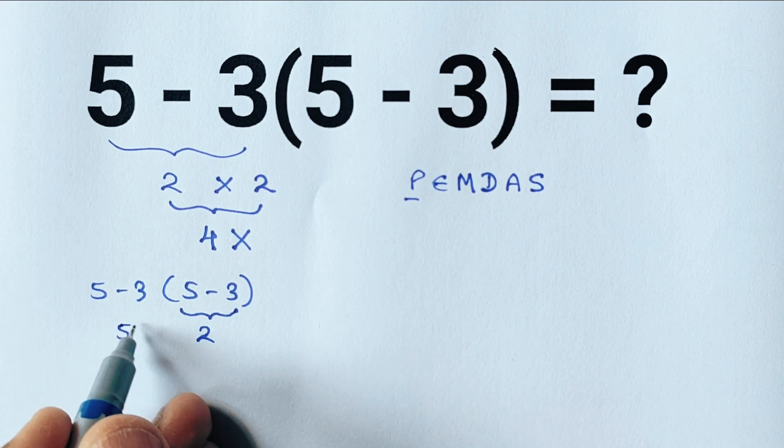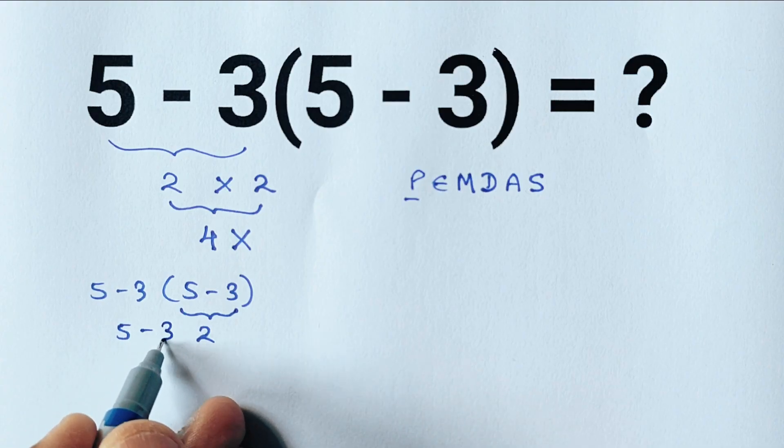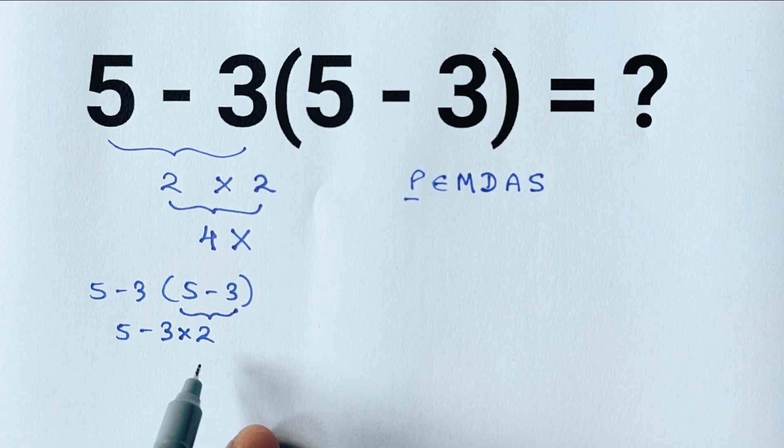Now the expression looks like this: 5 minus 3 and the parenthesis means multiplication. So 5 minus 3 times 2.